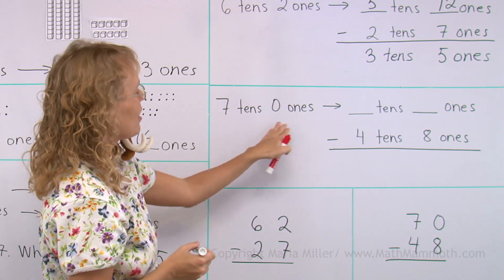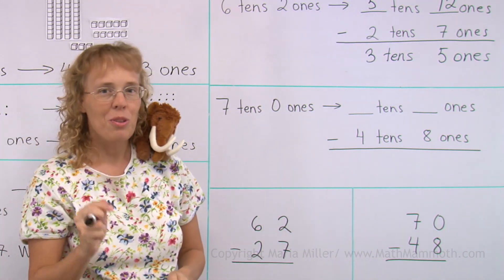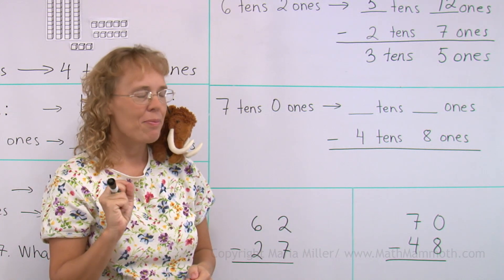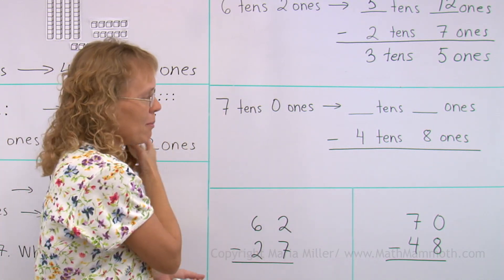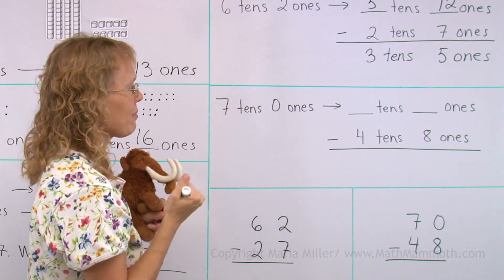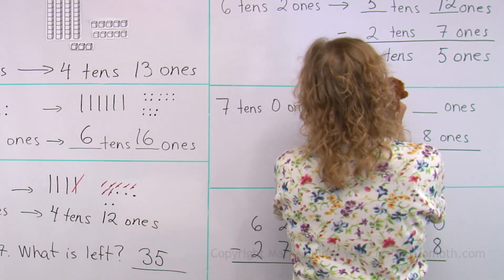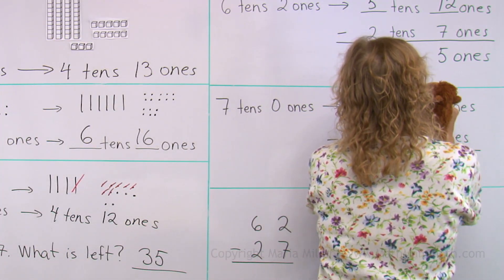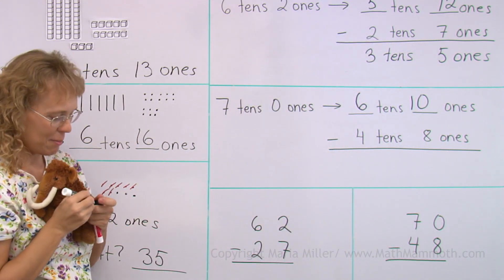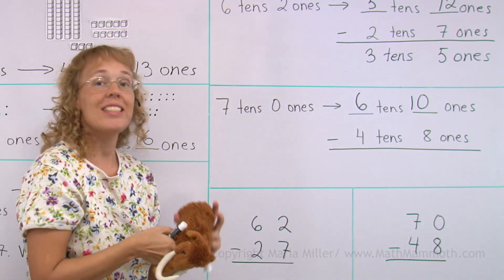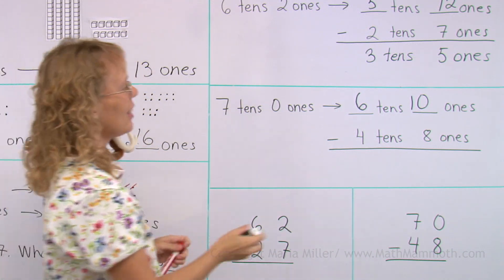Seven tens, zero ones. Can you do the regrouping? How many tens? How many ones? I'll let Mathie do it this time. And now you check if you got the same as Mathie. Mathie got it right. Thanks, Mathie. Six tens, ten ones. Now subtract.